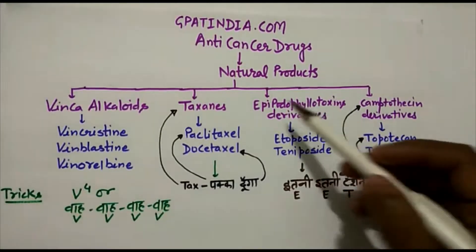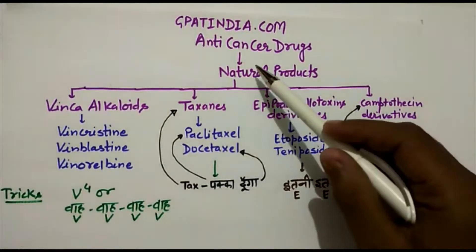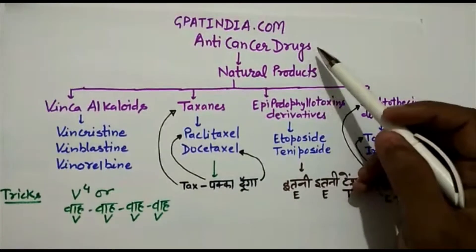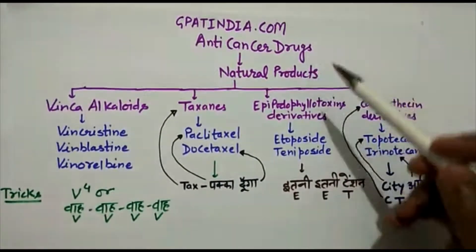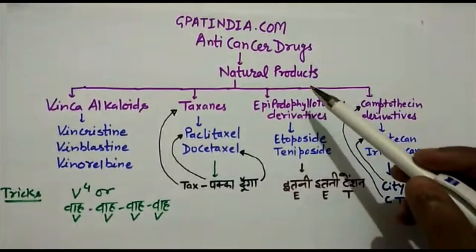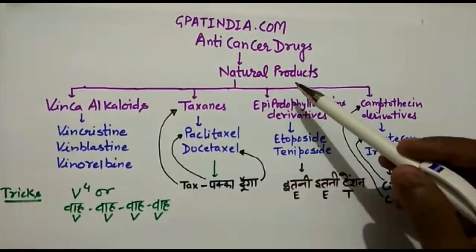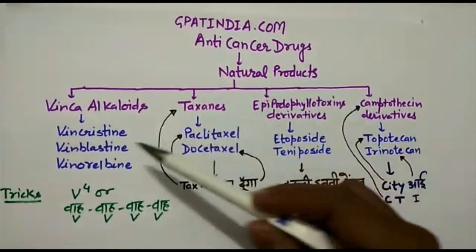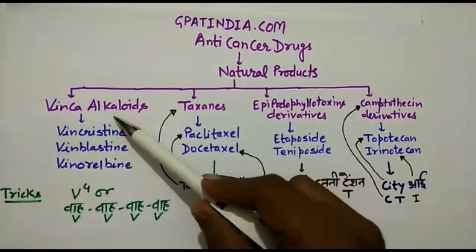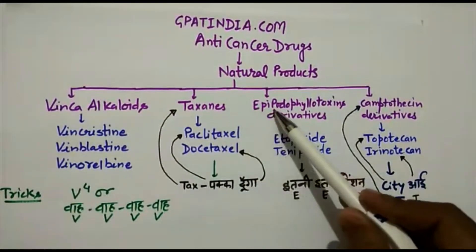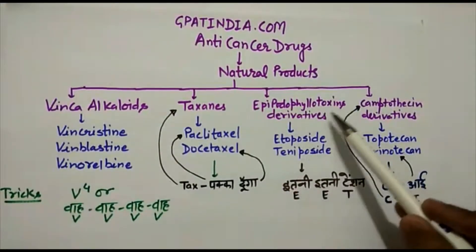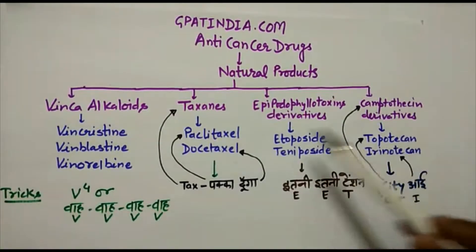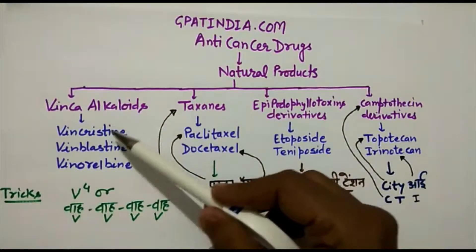Hello everyone, today we will learn anti-cancer drugs — the classification of anti-cancer drugs. One category under this classification is natural products, which includes vinca alkaloids, taxanes, epipodophyllotoxin derivatives, and camptothecin derivatives.